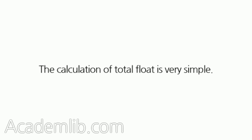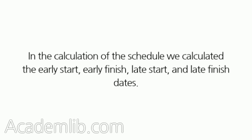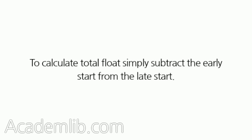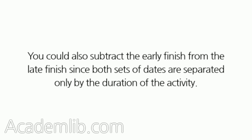The calculation of total float is very simple. In the calculation of the schedule we calculated the early start, early finish, late start, and late finish dates. To calculate total float, simply subtract the early start from the late start. You could also subtract the early finish from the late finish, since both sets of dates are separated only by the duration of the activity.